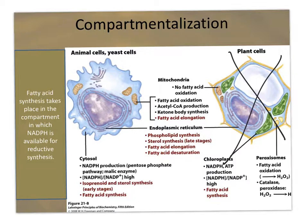Gluconeogenesis is one of the tricky ones because it has part in the cytosol and part in the mitochondria matrix in particular. The citric acid cycle takes place in the mitochondrial matrix. Now, technically, succinate dehydrogenase is located in the inner membrane. Beta-oxidation is in the mitochondrial matrix, and so you start putting things together.